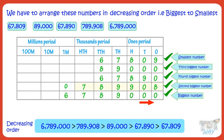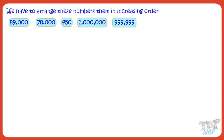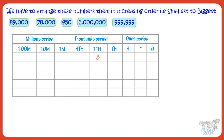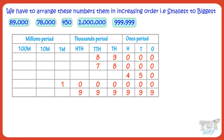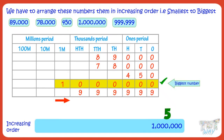Now let's take one more example. Again, we have five numbers and we have to arrange them in increasing order — that is, from smallest to biggest. First of all, write all the numbers in the place value chart. Now we want to arrange the numbers in increasing order, so we want the smallest number first. In the place value chart, we start at the left. There is only one number which has a digit at the millions place, so it's the biggest number — mark it five, meaning it's placed last.